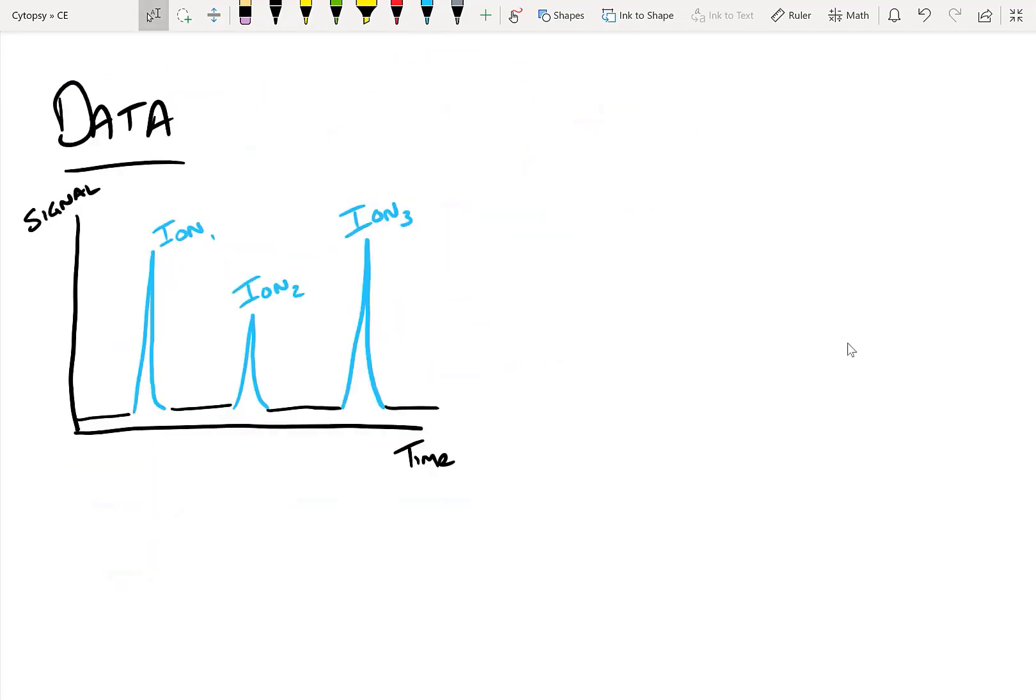And in the end, the data that you get looks kind of like this - you see signal as well as time. And what this means is, as our sample is going past the detector, you're seeing a peak. So in this case, some ion peaked first, then another ion showed up, and then a third ion showed up as it was going past the detector.